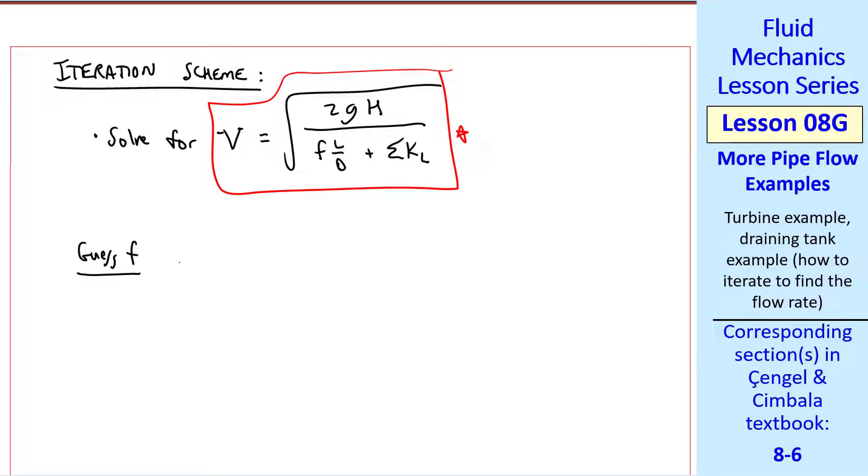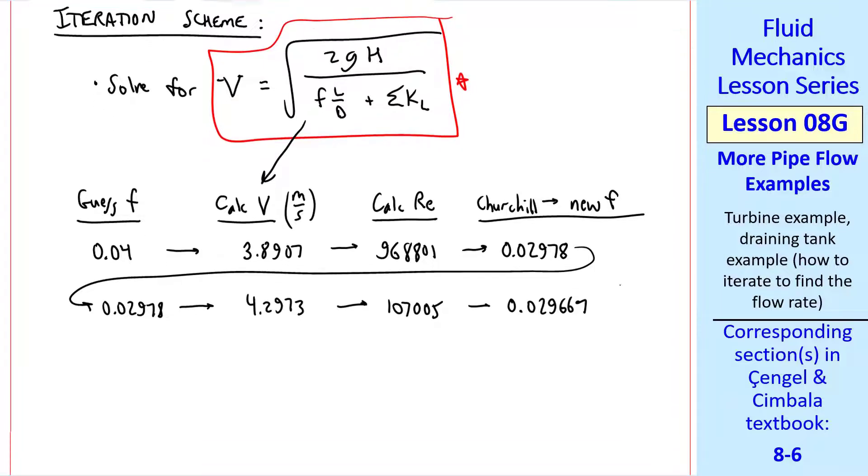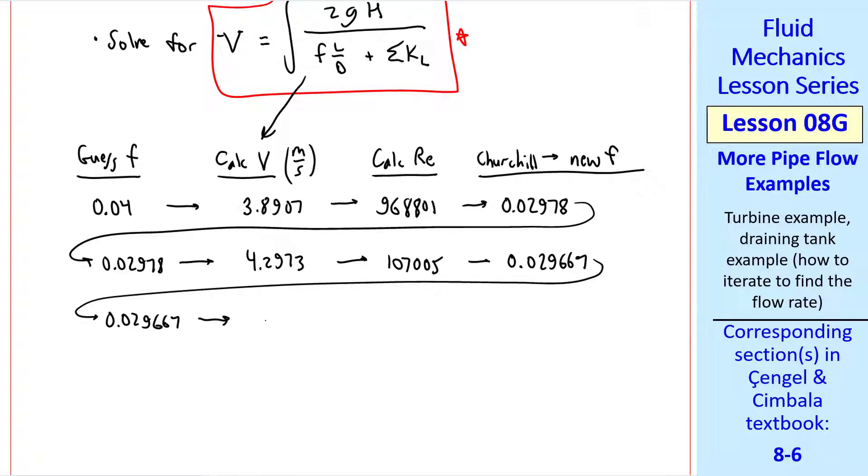I'm going to guess f, the Darcy friction factor. Then I can calculate v from this equation. The numbers I give will be in units of meters per second. Once I have v, I can calculate the Reynolds number, and then from Churchill, I can get a new f. I'll guess something reasonable, 0.04. Plug that into this equation where we know everything else. I get 3.8907 meters per second, which yields this Reynolds number, and then the Churchill equation gives me f. I'm going to use this f as my next guess, and I repeat the calculations, v, Reynolds number, and a new f, which I use for my next round of iteration. You can see that we're converging in just three iterations.